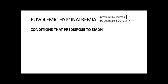In euvolemic hyponatremia, the total body water increases but total body sodium remains normal. All of these conditions produce SIADH — syndrome of inappropriate antidiuretic hormone. Normally, when plasma osmolality rises, ADH secretion increases, acts on the collecting duct of the kidney, and leads to free water retention to counterbalance the rise in osmolality. But in SIADH, regardless of plasma osmolality, ADH is inappropriately secreted, leading to excess total body water even though total body sodium is normal.